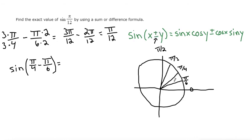So since we're using the minus option, our formula will also have a minus in it. So we'll simplify this to sine of pi over four times cos of pi over six minus cos of pi over four times sin of pi over six.